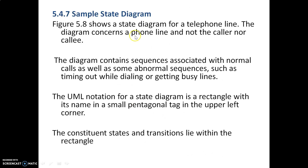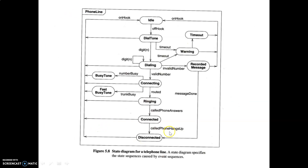This state diagram models a phone line and not the caller. It contains sequences for a normal call as well as abnormal sequences such as timing out while dialing or getting a busy line. The UML notation for a state diagram is a rectangle with its name in a small pentagonal tag in the upper left corner, and all constituent states and transitions lie within the rectangle.